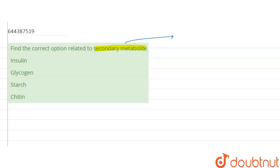These are products usually formed by organisms which are not required for growth, development or reproduction. These are formed by bacteria, certain fungi and plants.